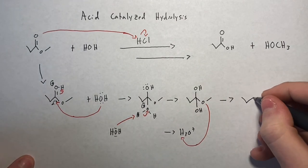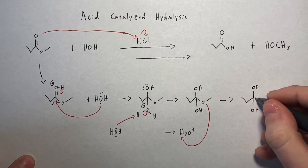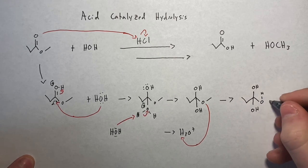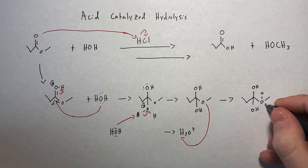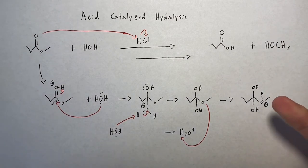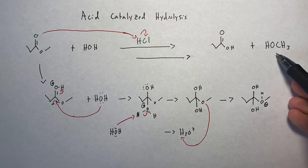So now we'll see what we're left with. Okay, well now we have a plus charge on our oxygen here. So it's a good leaving group, in other words. This is methanol. That's what we have right here. And our carboxylic acid right there.